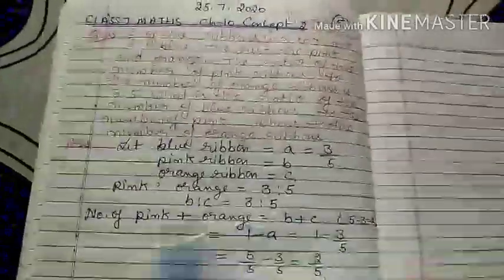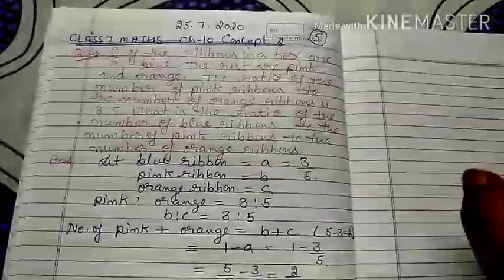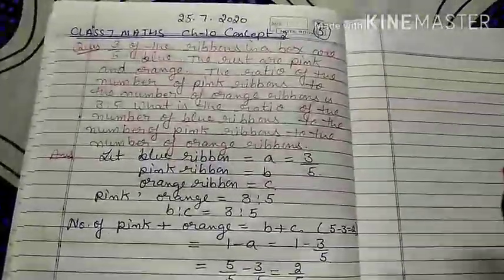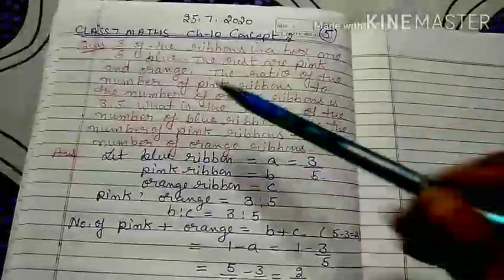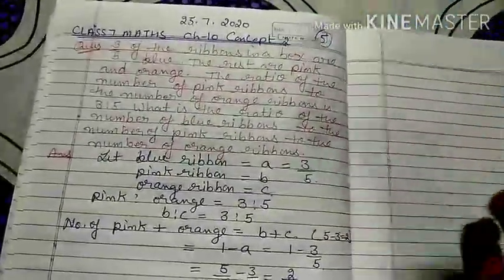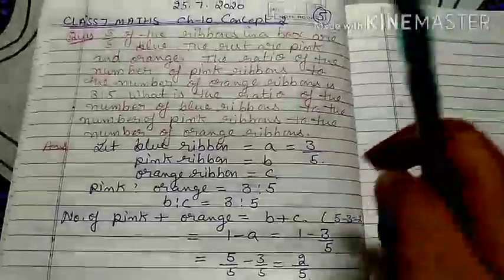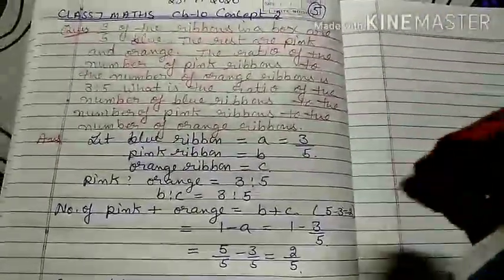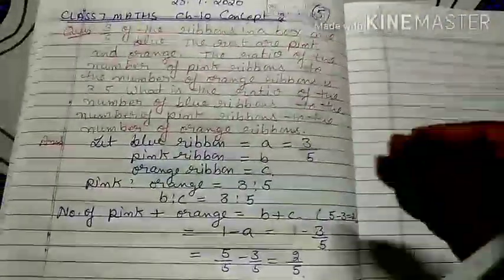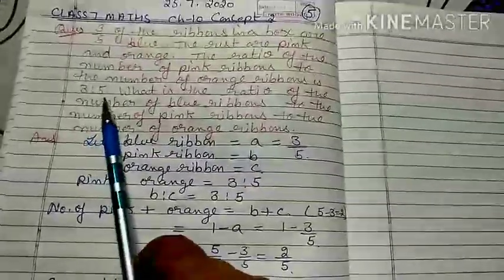Last question: In a box, the quantity of blue ribbon is 3/5 of the total ribbon. The rest of the ribbon — that is 1 − 3/5 = 2/5 — is shared between pink and orange ribbons.